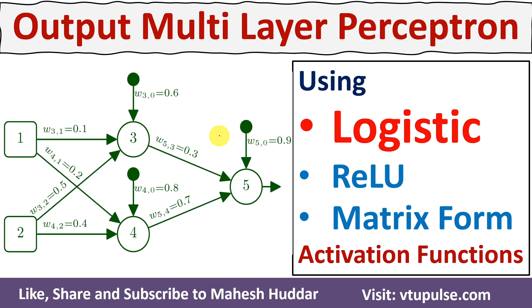Welcome back. In this video, I will discuss, given a multilayer perceptron network, how to find the output at the output layer neuron using logistic, ReLU, and ReLU with matrix form of activation functions.